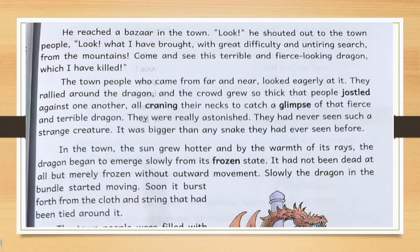All of them were surprised to see such a terrible creature. In the town, the sun grew hotter and by the warmth of its rays, the dragon began to emerge slowly from its frozen state. 'Emerge' means to rise up from the frozen state. 'Frozen' means becoming cold — when we keep something in the deep freezer, it becomes hard with ice. In the same way, as this creature was in the snowy mountain, it became inactive and dormant.